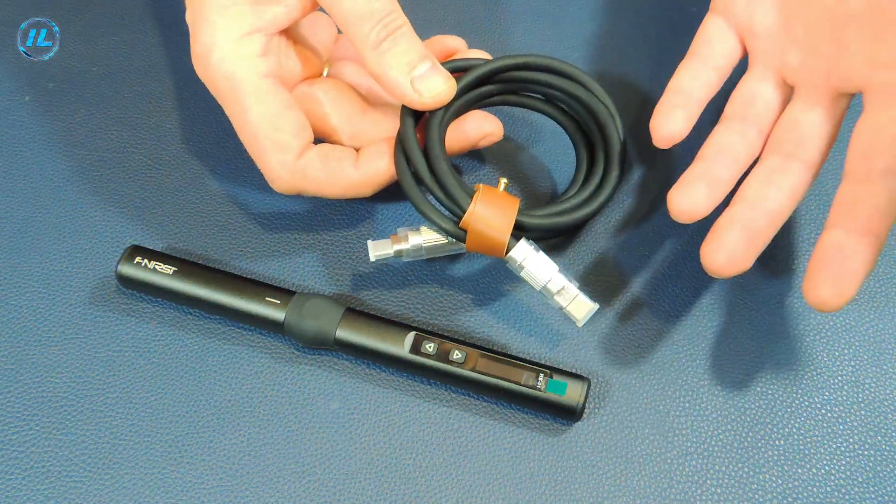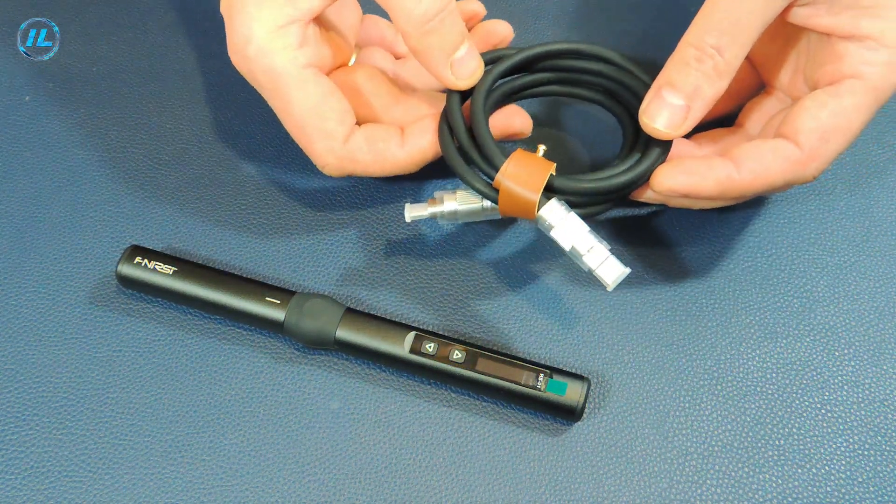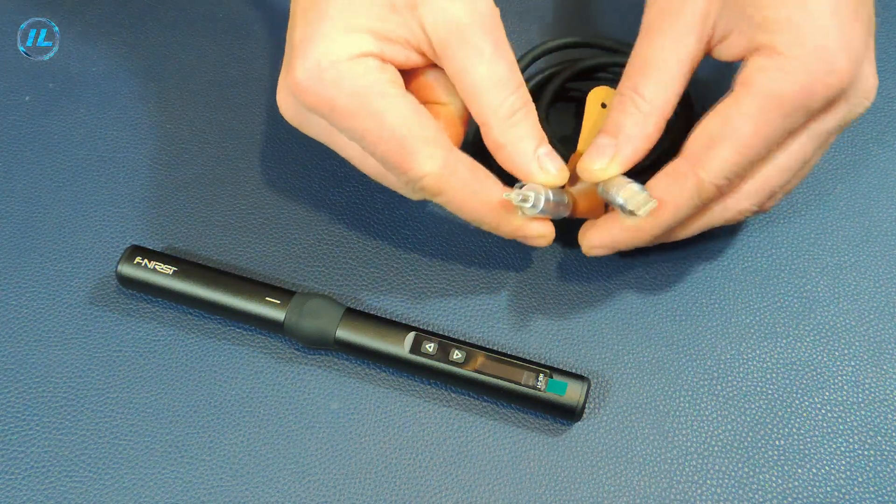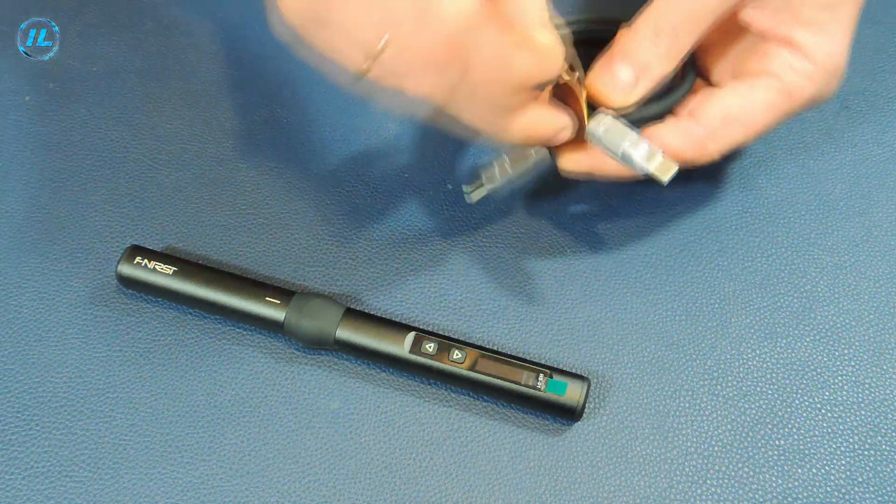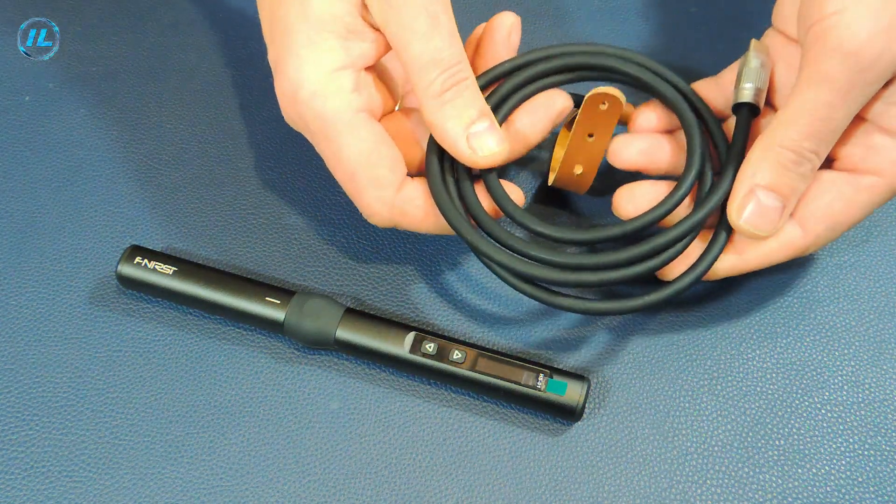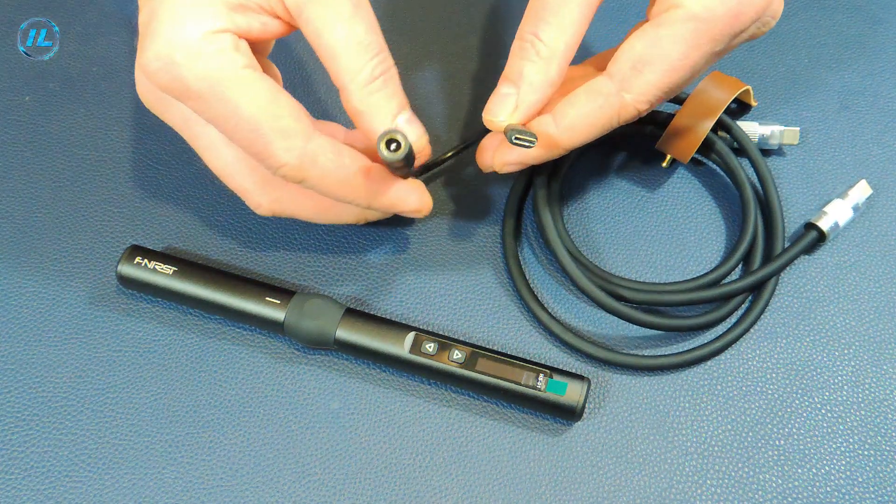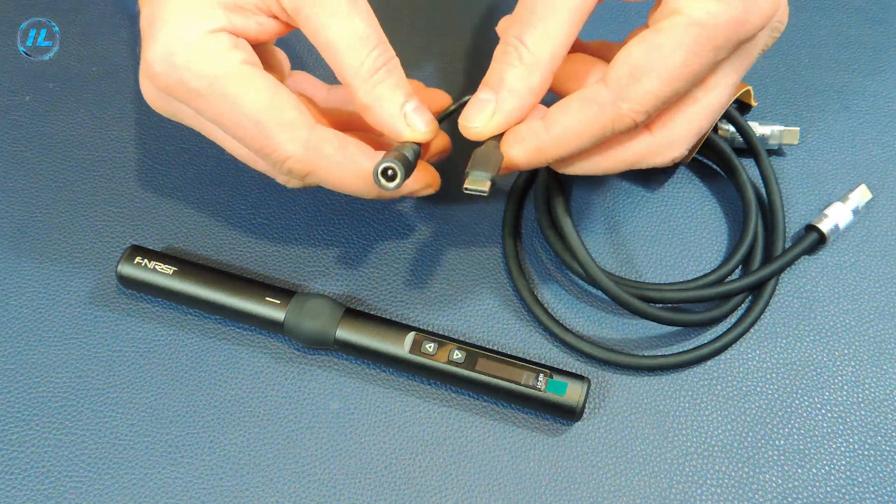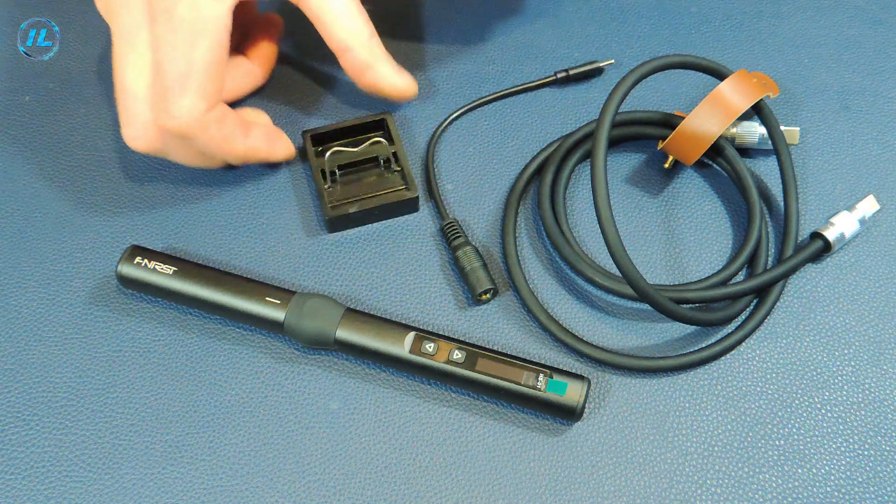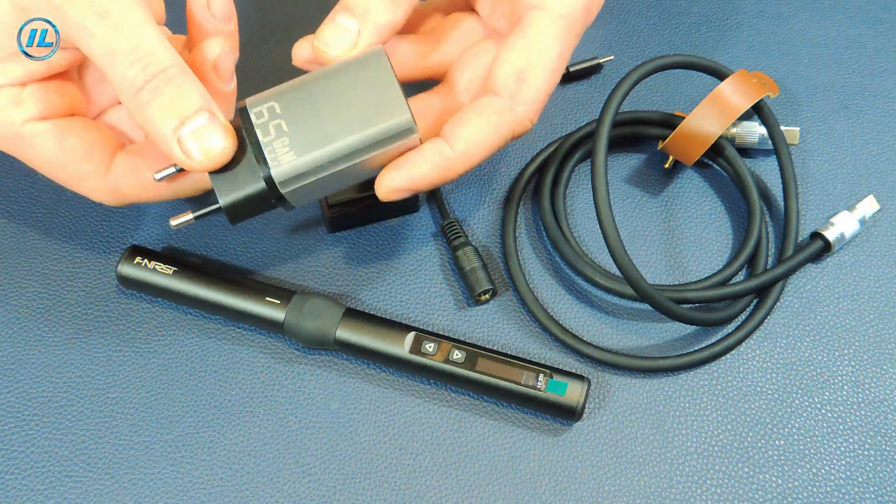Included with this soldering iron are several additions. Firstly, this is such a powerful cord for connecting to a power supply with type C connectors. The cord is silicone and very soft. Also here is such an adapter, a soldering iron stand, and a powerful 65 watt power supply.